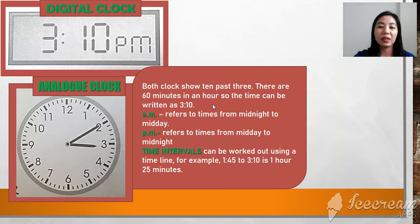There are 60 minutes in an hour, so the time can be written as 3:10. AM refers to times from midnight to midday. We'll repeat: PM refers to times from midday to midnight.